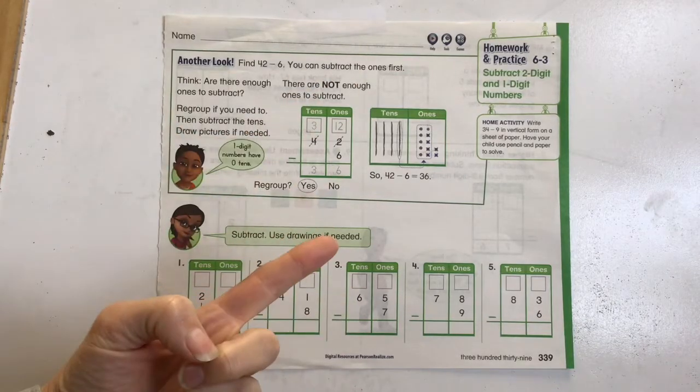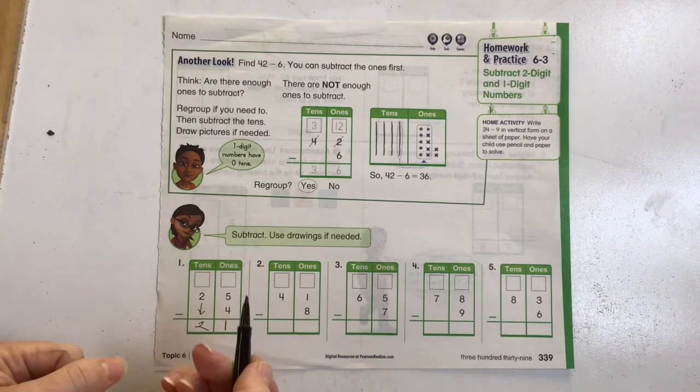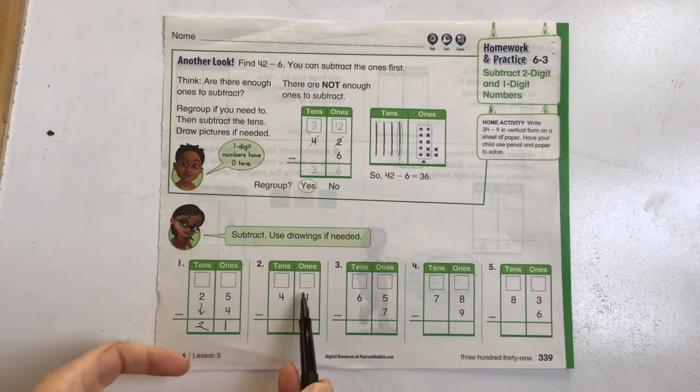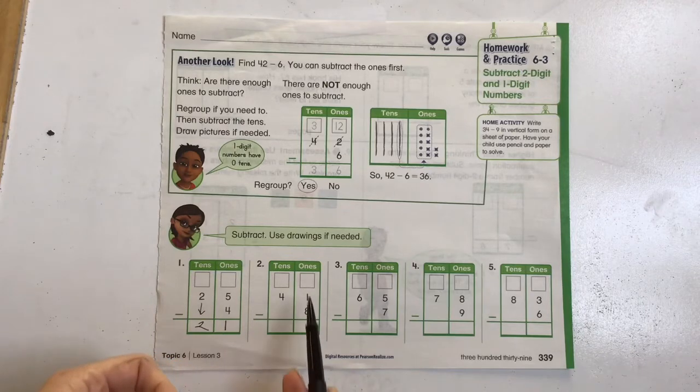Okay, 1 minus 8. If I have 1, I subtract 8, I can only subtract 1. So we know that we're going to need to regroup because the number above in the ones place, if it is smaller than the number below, we've got to regroup.